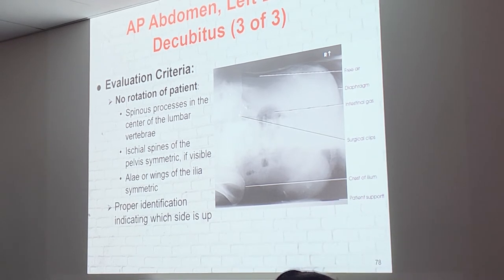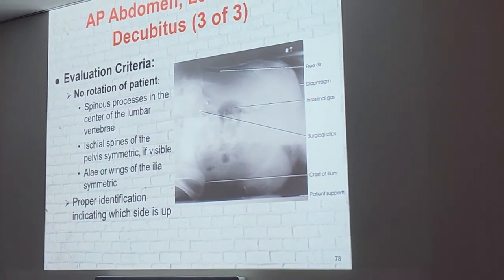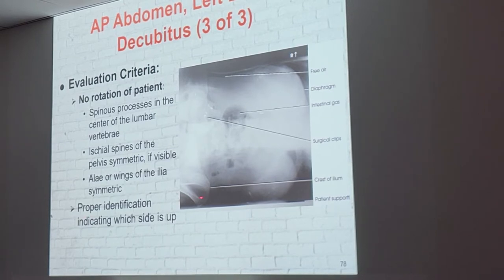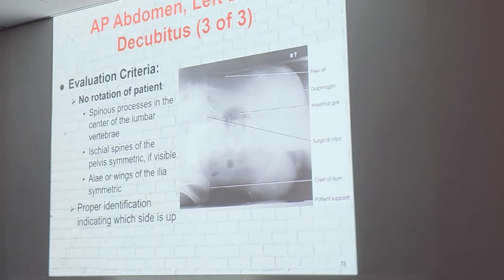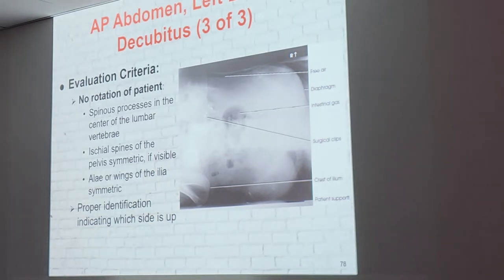Evaluation criteria: no rotation of the patient — their back must be flat against the IR, in a true lateral. Spinous processes should be at the center of the vertebrae. The flat area of the pelvis should be symmetric. Very importantly, we want proper identification indicating which side is up. Put a little arrow marker on the elevated side. Since we always do left lateral decubitus for abdomens, you're always going to put an R marker with the arrow pointing up at the top of the film.